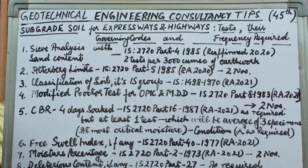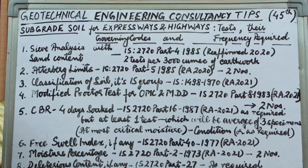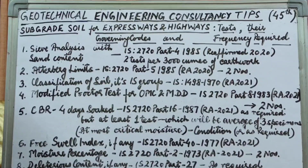Number three: after having done these two tests — sieve analysis with sand content and Atterberg limits — you have to classify the soil as per IS Group Classification, which is done as per Indian Standard code IS 1498, 1970 reaffirmed 2021.